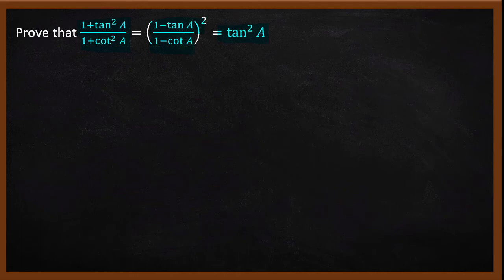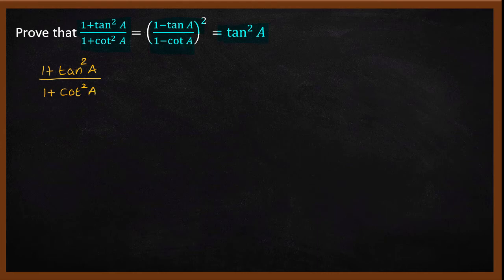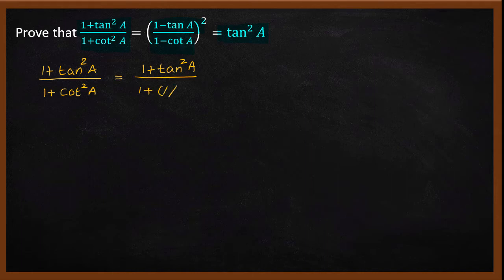First one. So, 1 plus tan square a numerator, denominator 1 plus cot square a. Now, cot square a — replace with tan. Denominator: 1 divided by tan a. That is squared. Cot a is 1 by tan a.